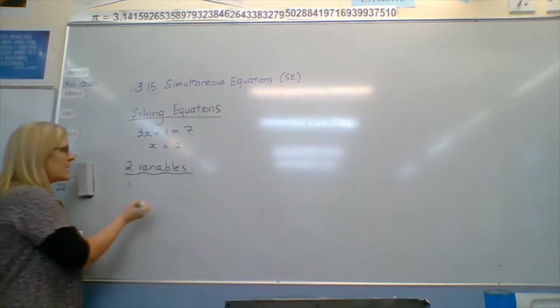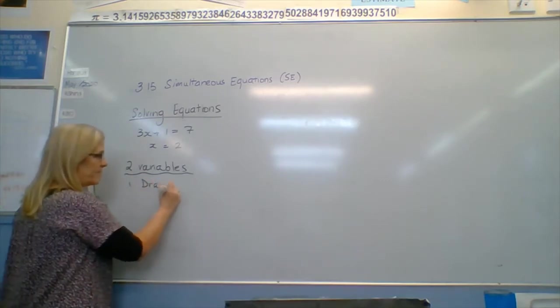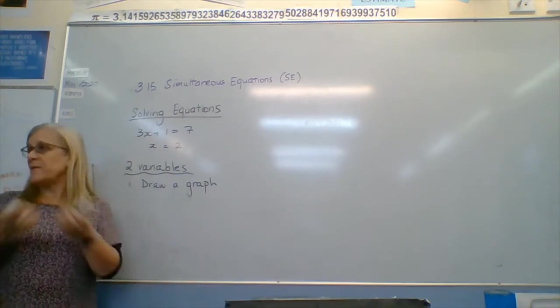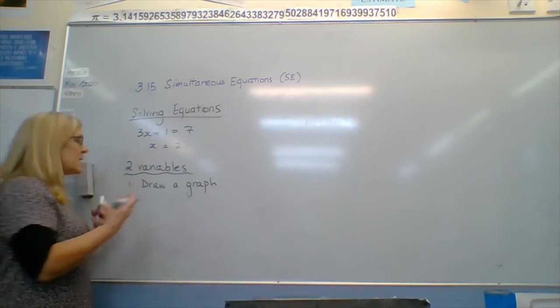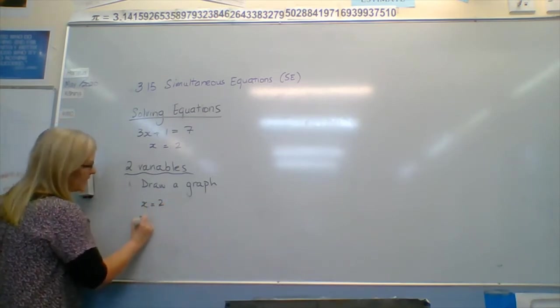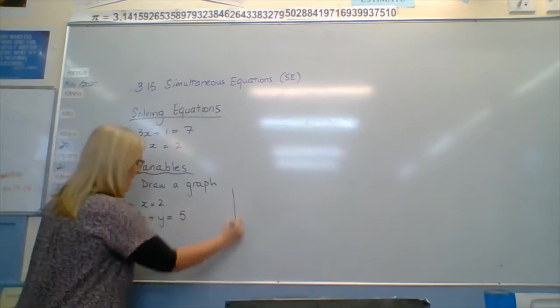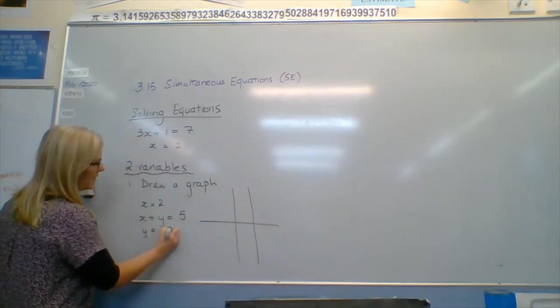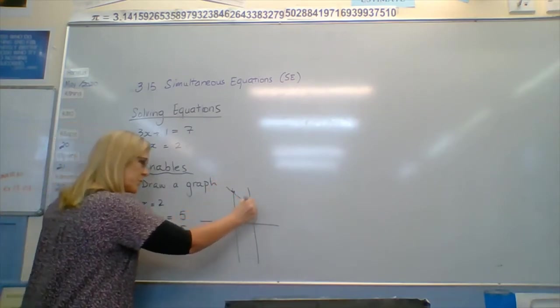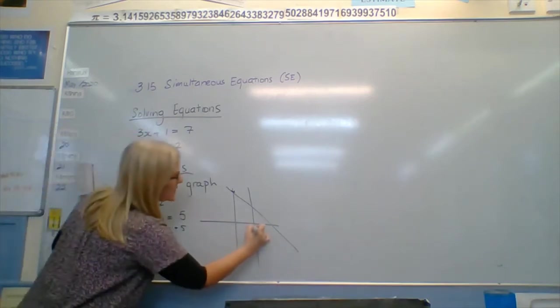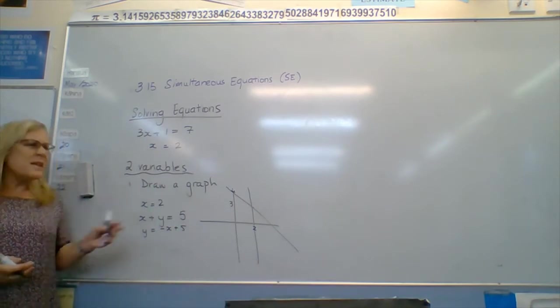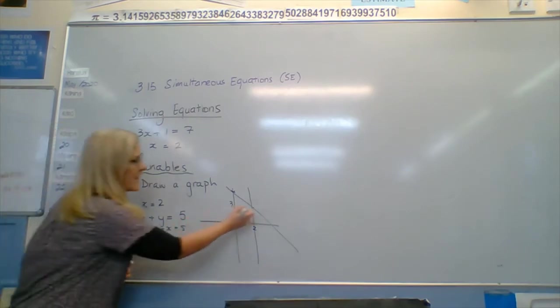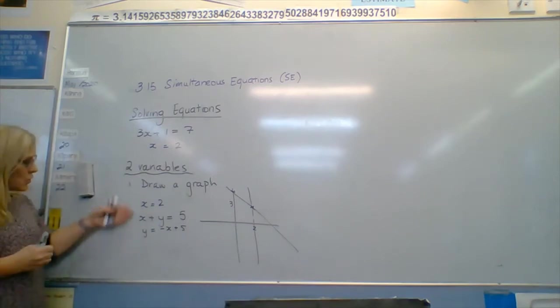We've got three different methods for doing this. The first method is to draw a graph. It's pretty much what the calculator does. It draws you a graph and finds where the intersection is. If you had x equals 2 and x plus y equals 5, the graph would look like x equals 2 as the line goes through there. x plus y equals 5 as y equals negative x plus 5, so through 5. When it's 2, we can work out that y is 3. We're finding that point of intersection, which is the solution to two equations.